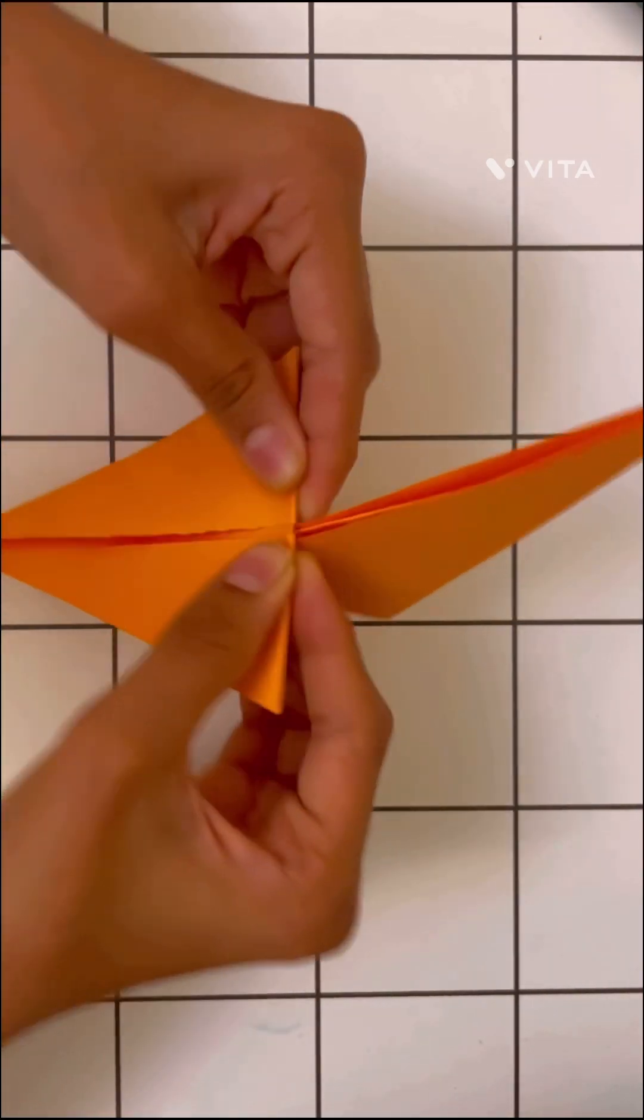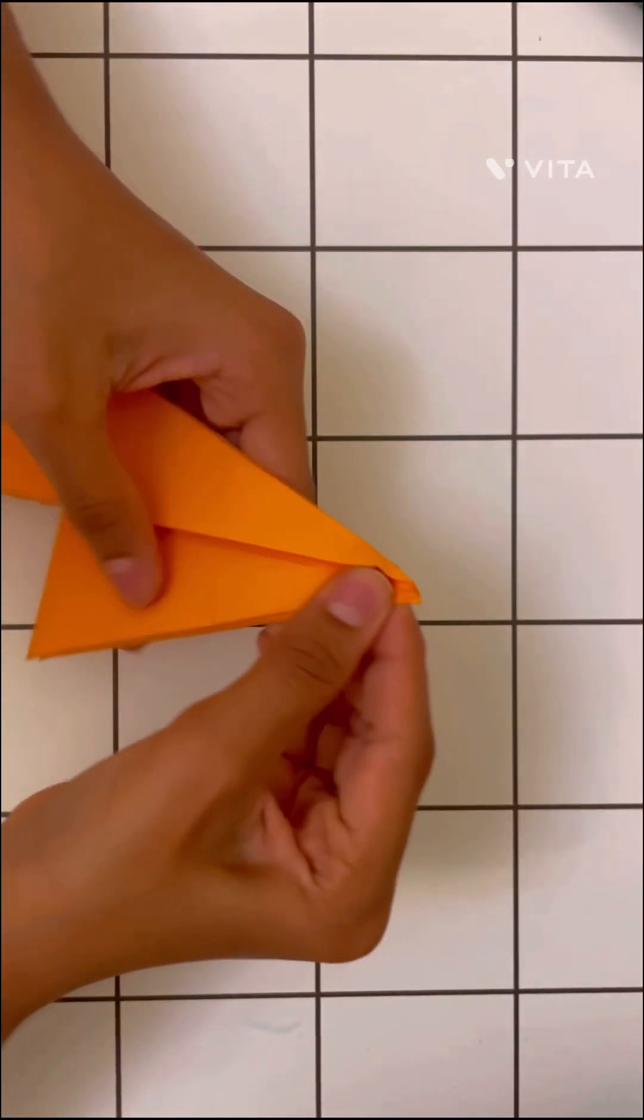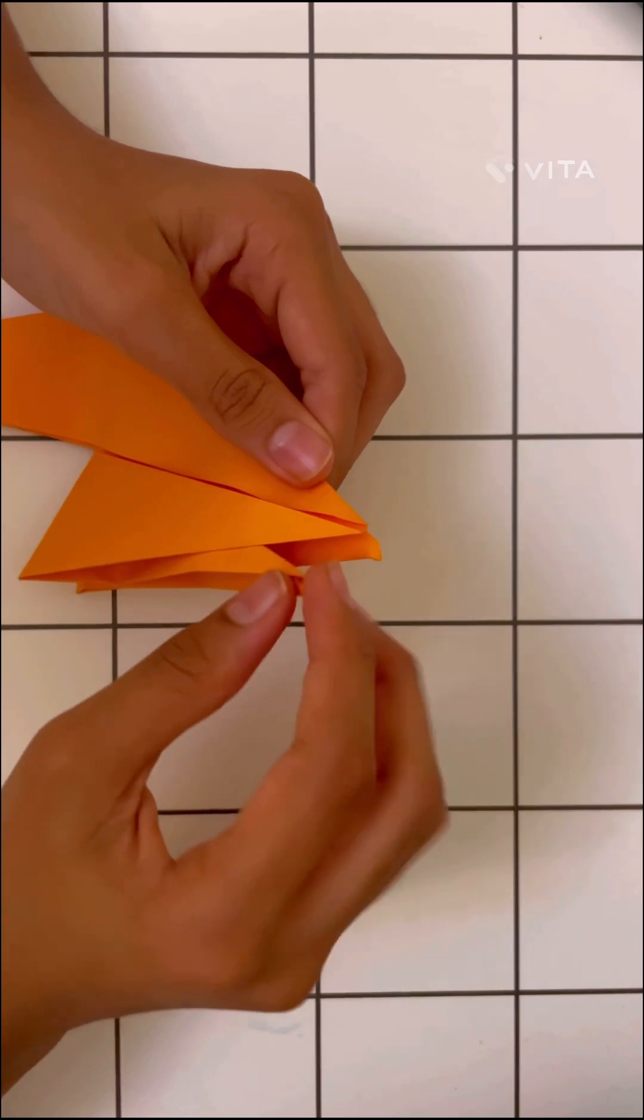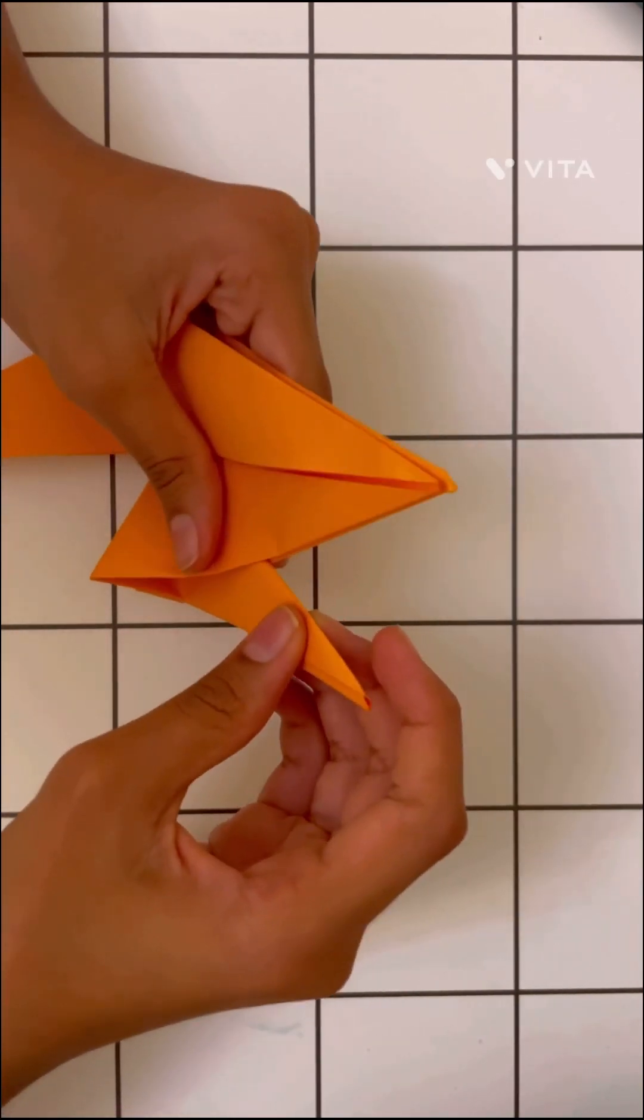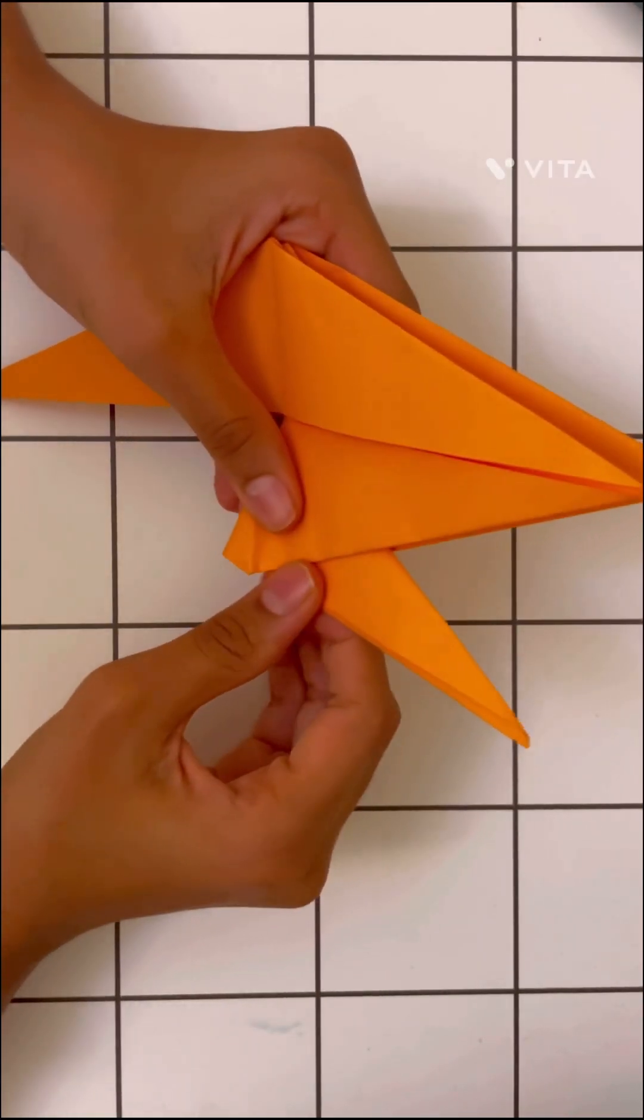And then when it's done, you fold this. You can see it's like disappeared into these two. So then you adjust these like to look like they are, it's a tail or something.